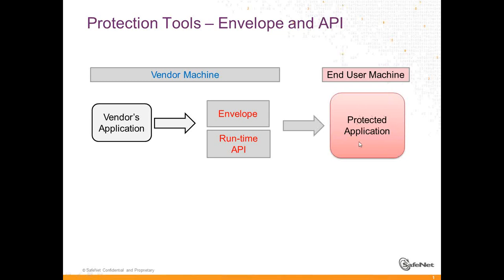So how does the ISV, the vendor, create this protected application out of their application? The application consists of executables plus DLLs, etc. There are two components used for this: one is the envelope, and the other is the runtime API or the licensing API — the same names are used for this. Let me show you about each of them.